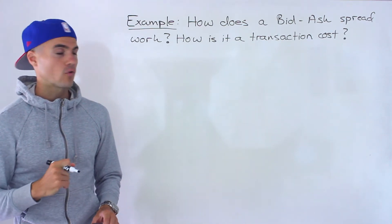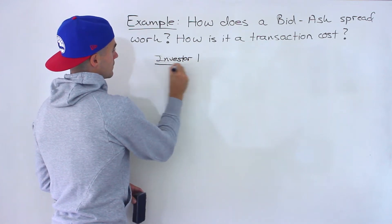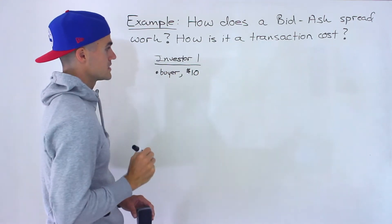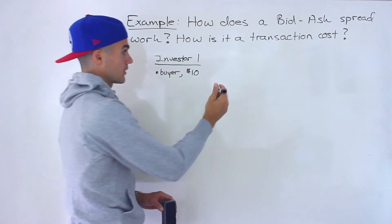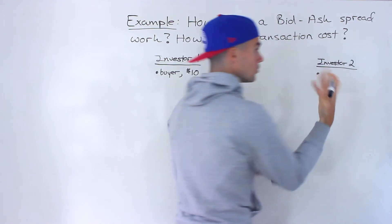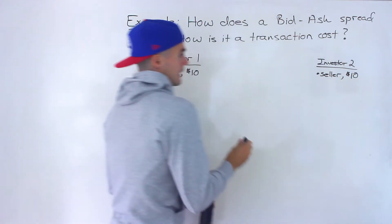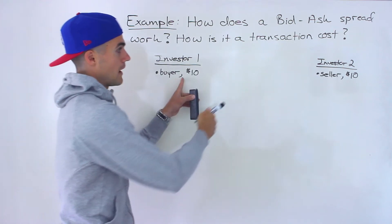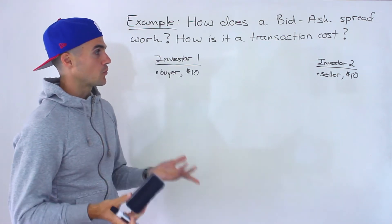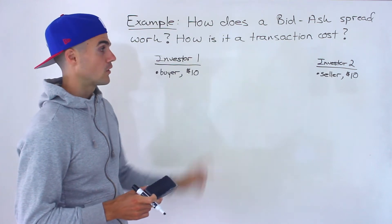Let's say that you want to buy a stock for $10. We'll call you investor one, and you're the buyer. You want to buy a certain stock for $10. And let's say there's another investor in the market — investor two — and they're holding the stock right now and they want to sell it to you at $10. To keep things simple, let's just pretend we're dealing with one share.